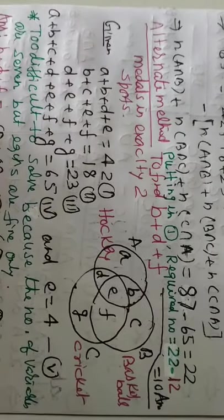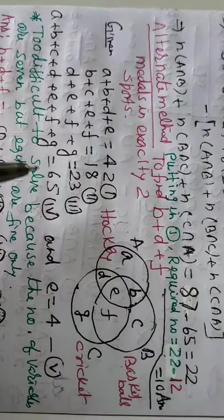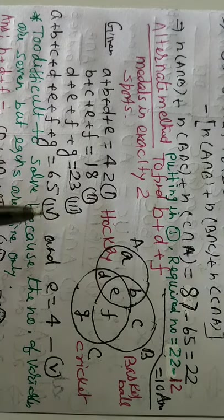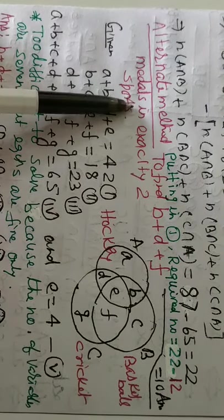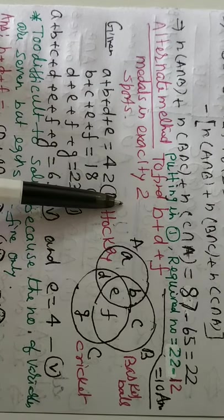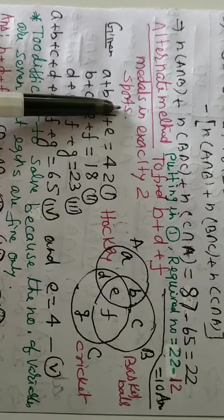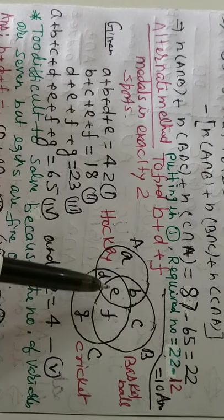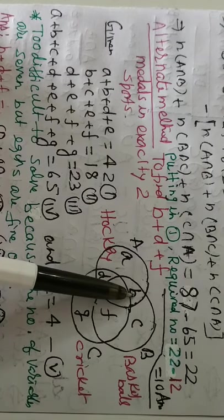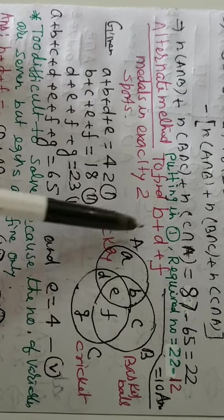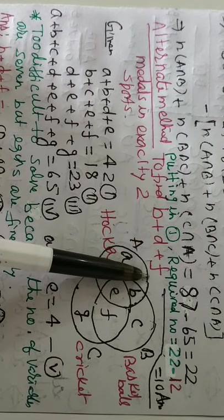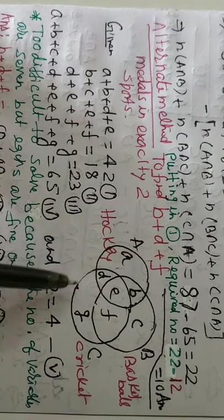There is alternative method. If you can learn alternative method, it will be more easier. A, B, C, D. You have to find out medal in exactly two subjects. Two sports. Sorry. Two sports means this is B. B got medal in A and B both. D and F. Only you have to find out B, D, F. So, just see how it is obtained.